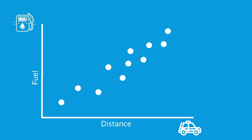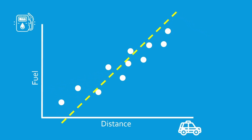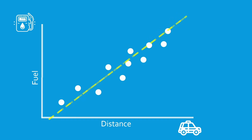Linear regression is finding the line that best fits this data, and there are several ways to find it, including optimization to minimize the error between the line and the data points, which is also known as least squares.